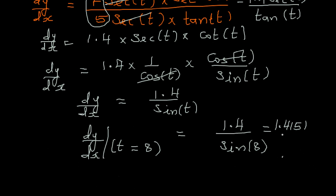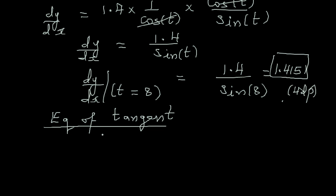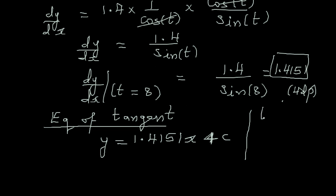So the gradient is 1.4151 to 4 decimal places. The equation of the tangent is y = mx + c, so y = 1.4151x + c. To find c, we need a point on the curve. When t = 8, what are the x and y coordinates?